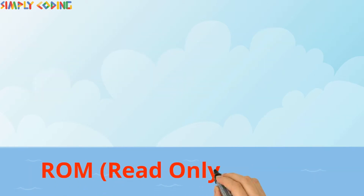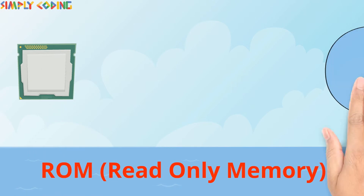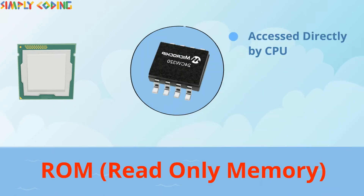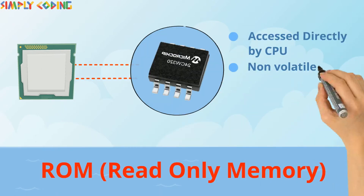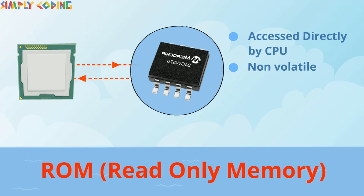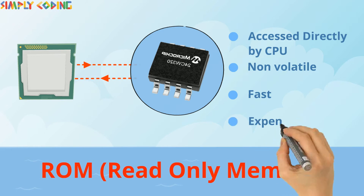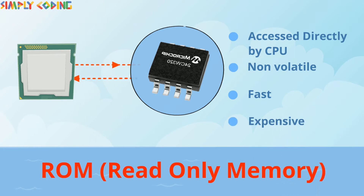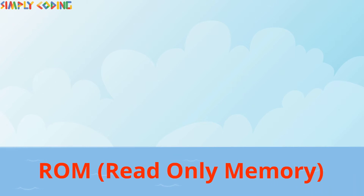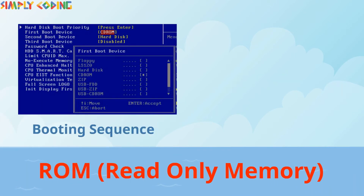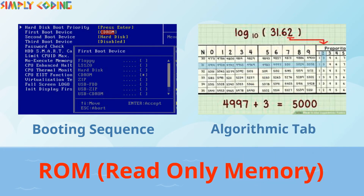ROM stands for Read Only Memory. It can be read only by the processor and it retains its data even after power is switched off. New data cannot be written on ROM, so typically it has information written during the manufacturing phase itself. Due to this limitation, it contains fixed information like the booting sequence of a computer or algorithmic tables for mathematical applications.